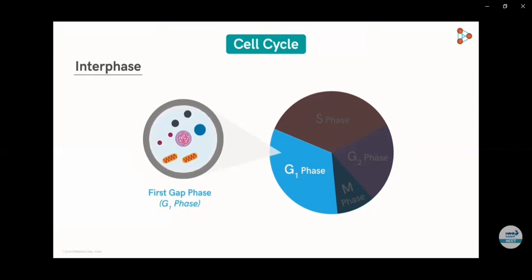Here you can see the different organelles which are going to double because when a cell will be divided into two, all the things should be the same for both cells. So for this aspect, cell needs to duplicate all its organelles and enzymes.